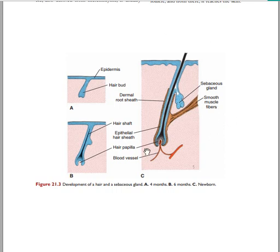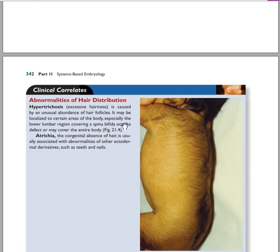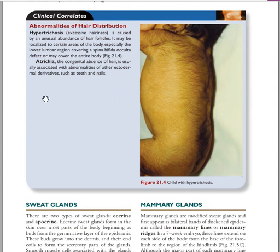Disorders of hair distribution include hypertrichosis, where there is excessive hair formation caused by an unusual abundance of hair follicles. It may be localized at the level of spina bifida or may cover the entire body. Atrichia is the congenital absence of hair.